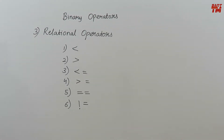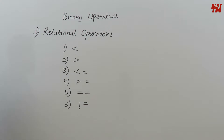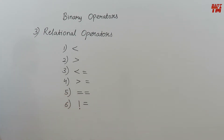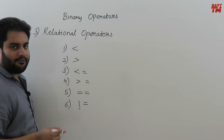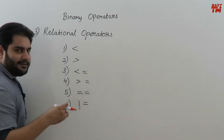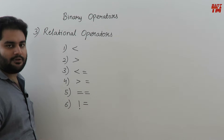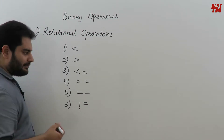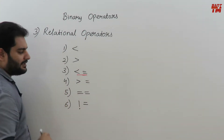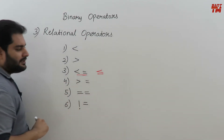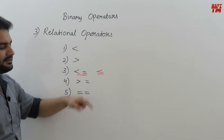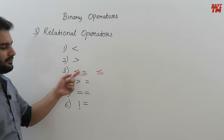The third category of binary operators is relational operators: less than (<), greater than (>), less than or equal to (<=), greater than or equal to (>=), equal to (==), and not equal to (!=). Important: write less-than-equal-to as <= not with a dash, because you cannot type that on a keyboard. For equality, always use double equal to (==), not single equal to. For not equal to, use != because there is no other way to represent it on a keyboard.